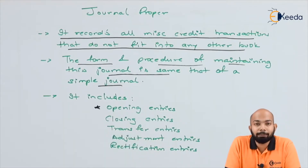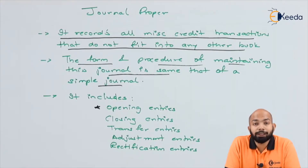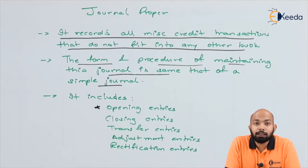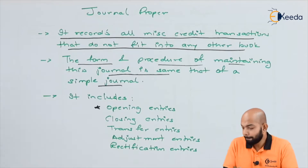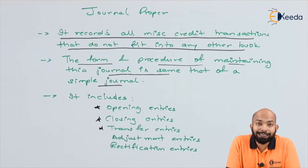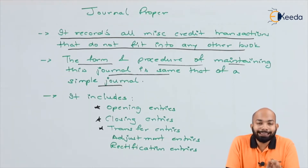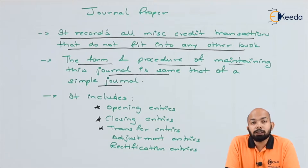It includes opening entries — opening balances such as debtor accounts, creditors account, and bills payable account opening are recorded in journal proper. Similarly, closing transactions are also a part of journal proper. Transfer entries, whereby you transfer from one account to a different account, will also form a part of the journal proper book.